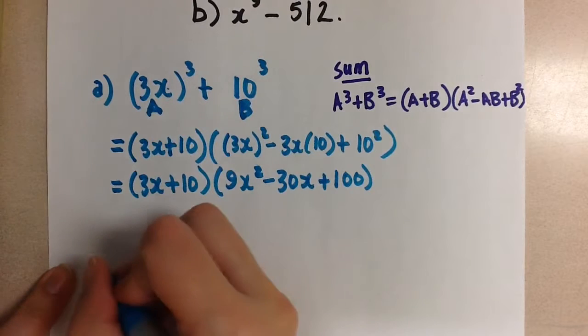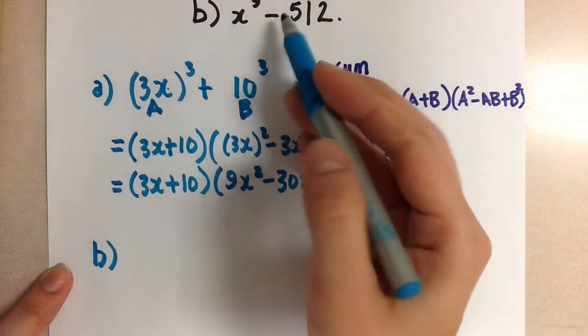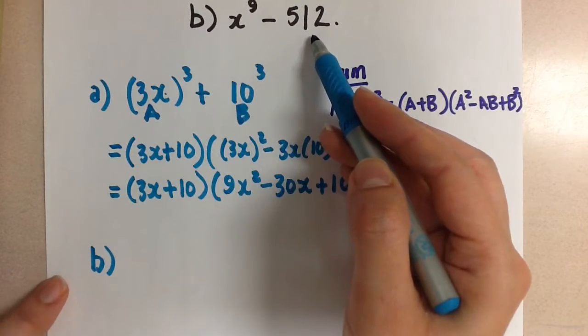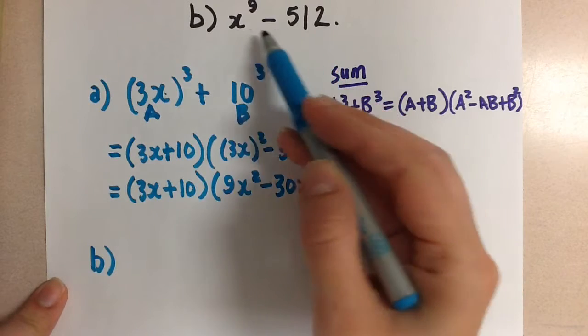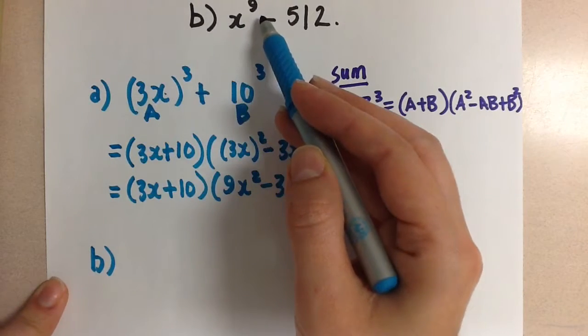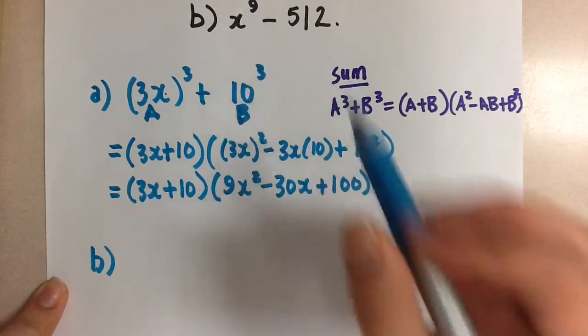Now let's look at the second one. It's a little more complicated. We have x to the 9 minus 512. So we need to rewrite this as a cube, which we can do, and rewrite this as a cube, and then we have a difference of cubes.